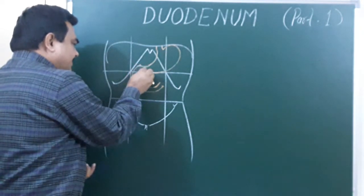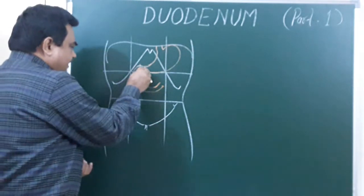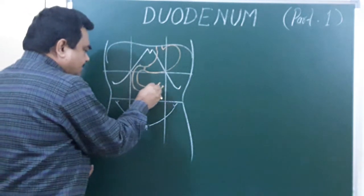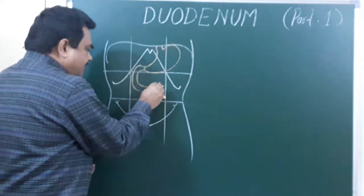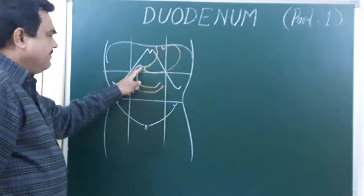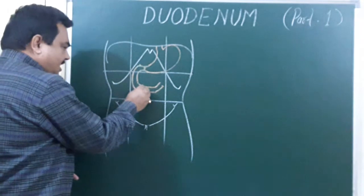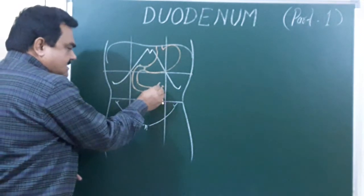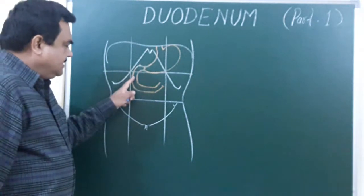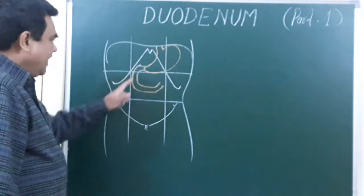This is the first part, this is the second part, this is the third part, and this is the fourth part. The first part is the superior part, the second is the descending part, the third is the horizontal part, and the fourth is the ascending part.